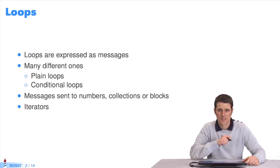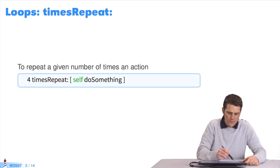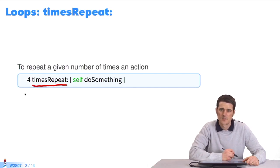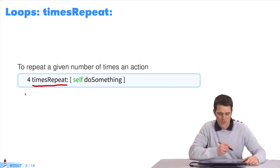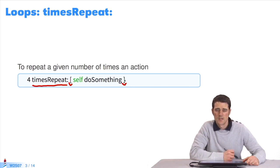In some cases, they are iterators over the elements of a collection. This is an example. I send the message timesRepeat to the integer 4. I pass it a block as a parameter. We studied blocks in the previous course. This block starts here and ends there. This message repeats the evaluation of this block several times. In this example, four times, as the receiver is 4.